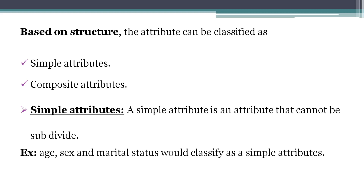Coming to simple attribute: a simple attribute is an attribute that cannot be subdivided. Once you have the attribute, its values remain as they are. For example, age, sex, and marital status are attributes that cannot be subdivided further, so they are simple attributes.